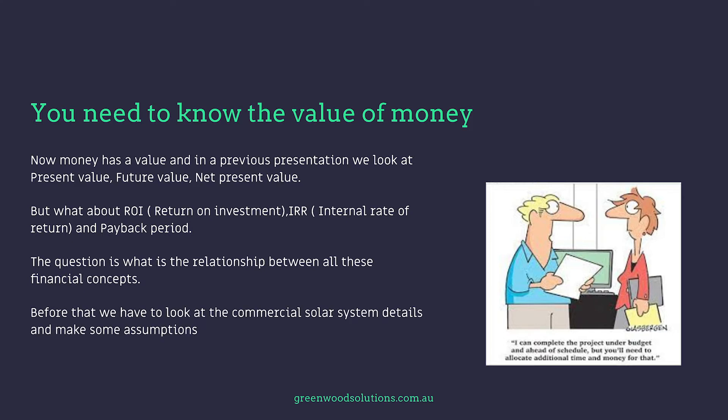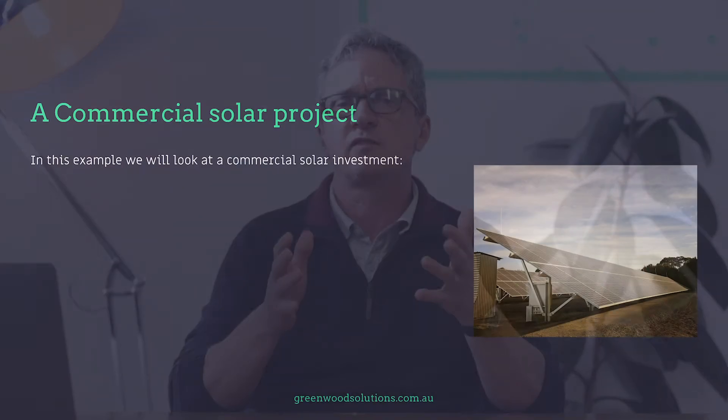Before that, we have to look at the commercial solar system details and make some assumptions. This whole area of finance is portrayed as fairly complicated, but when you actually look at the maths behind functions like internal rate of return, net present value, discounted payback period, and annualised ROI — it's pretty simple maths. In this example, we'll look at a commercial solar investment: a 100 kilowatt system costing $100,000 to the business.